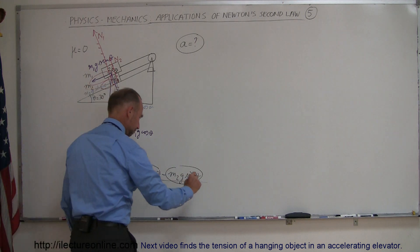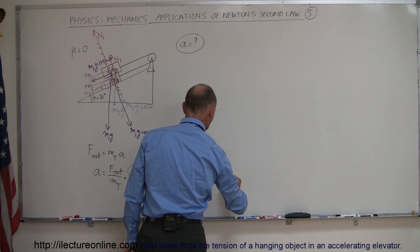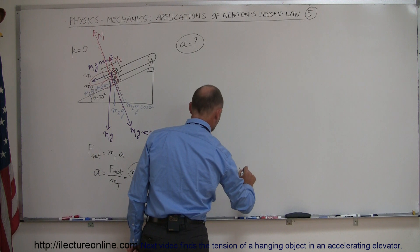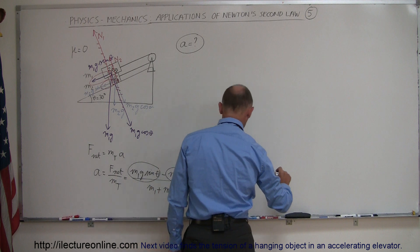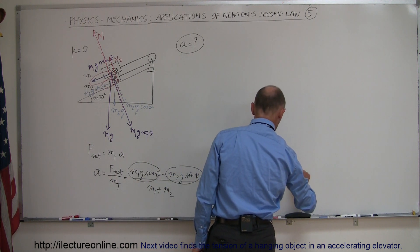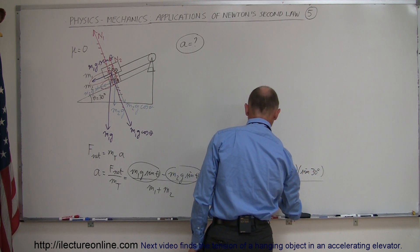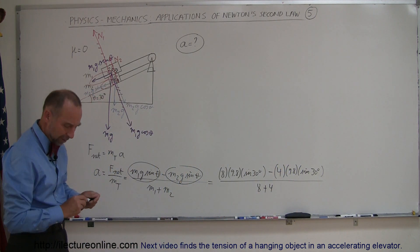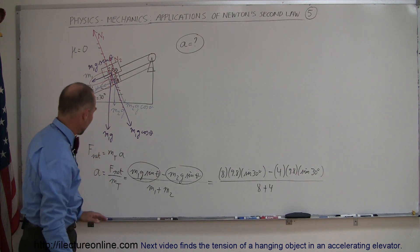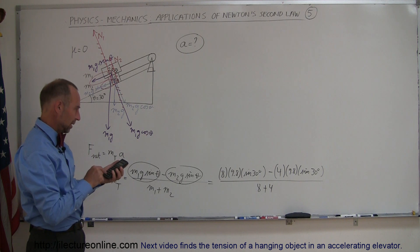Plugging in the numbers at this point m1 that would be 8 times g 9.8 times the sine of 30 degrees minus m2 which is 4 times 9.8 times the sine of 30 degrees all divided by 8 plus 4. Again I left the units off because it makes a lot quicker and cleaner to work with these numbers. Now notice that we're looking for accelerations the units will be meters per second squared.